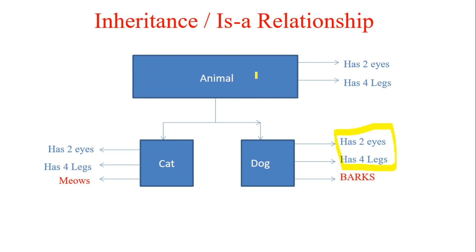Let me cover the terminologies I'll use throughout this video. A class is just a blueprint. A subclass or child class is a class which inherits or extends the parent class. A superclass or parent class is the class from which the subclass inherits properties — for example, two eyes and four legs are inherited from Animal, so Animal is the parent and Dog is the child.